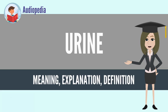Urine has a role in the Earth's nitrogen cycle. In balanced ecosystems, urine fertilizes the soil and thus helps plants to grow. Therefore, urine can be used as a fertilizer.